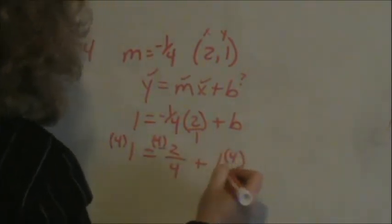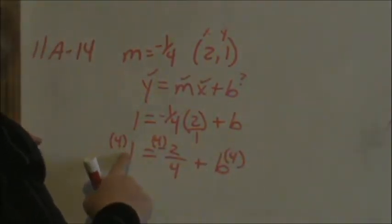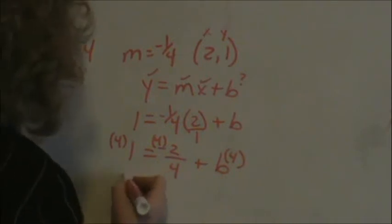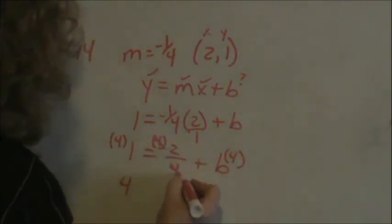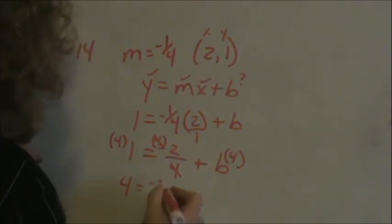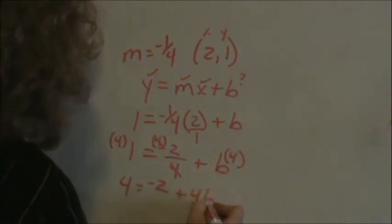I use parentheses to show multiplication. So 4 times 1 is 4. These fours cancel, leaving me a negative 2. Do not forget your negative. Negative 2 plus 4b.